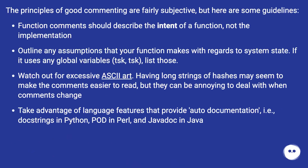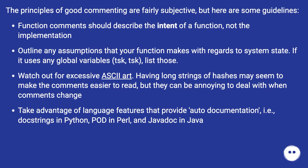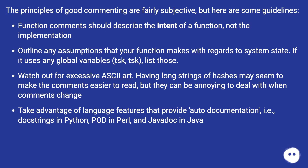The principles of good commenting are fairly subjective, but here are some guidelines. Function comments should describe the intent of a function, not the implementation. Outline any assumptions that your function makes with regards to system state. If it uses any global variables, list those. Watch out for excessive ASCII art — having long strings of hashes may seem to make comments easier to read, but they can be annoying to deal with when comments change. Take advantage of language features that provide auto documentation, i.e., doc strings in Python, pod in Perl, and javadoc in Java.